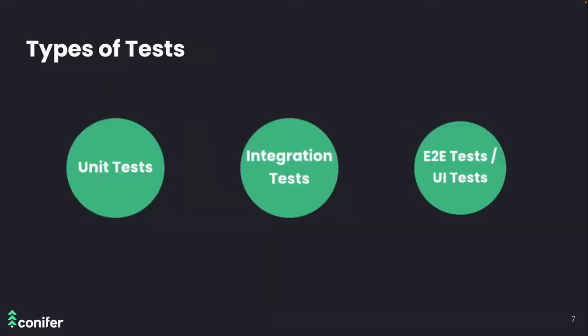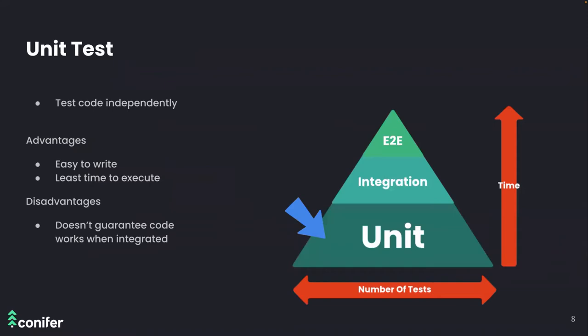There are many types of tests, but we'll cover the three main types. First, unit tests: at the most granular level, unit tests focus on a small individual part of an application, checking whether that code functions as designed. Unit tests are written to be independent from other units. They take a short amount of time to run, so it's recommended to write more of them. However, a passing unit test doesn't always mean the code will work as expected when other dependencies are introduced.